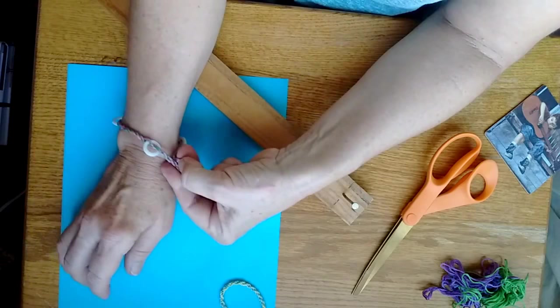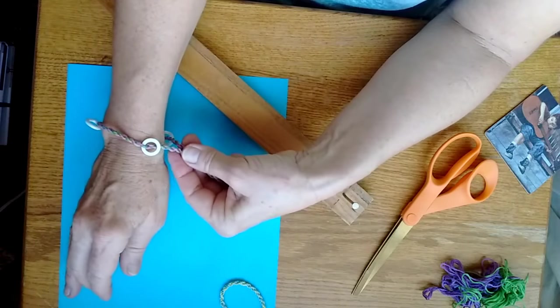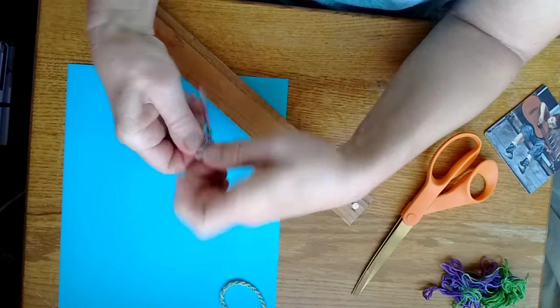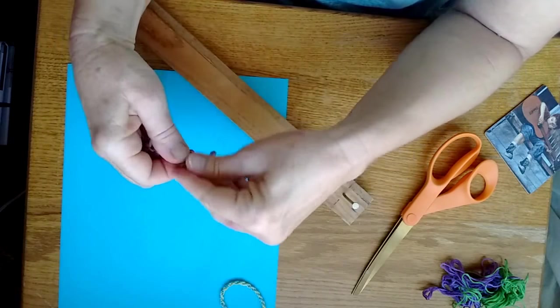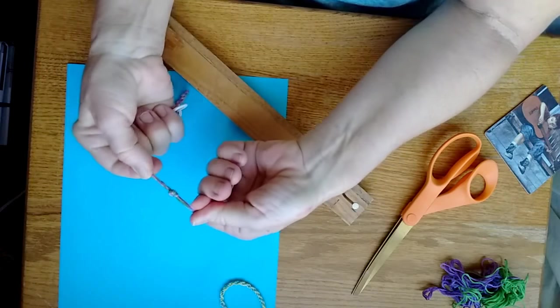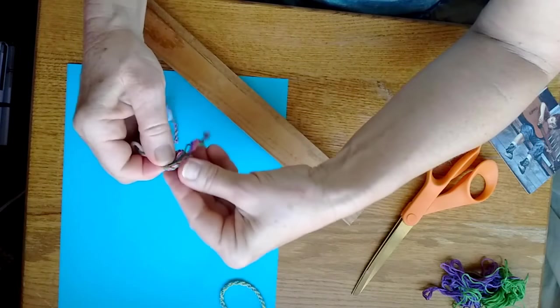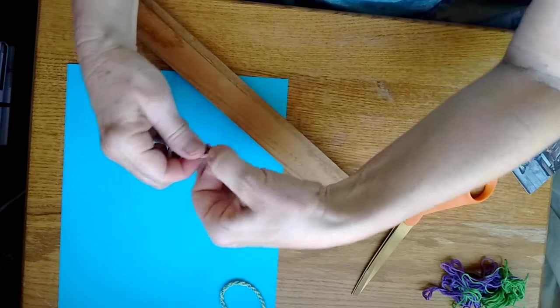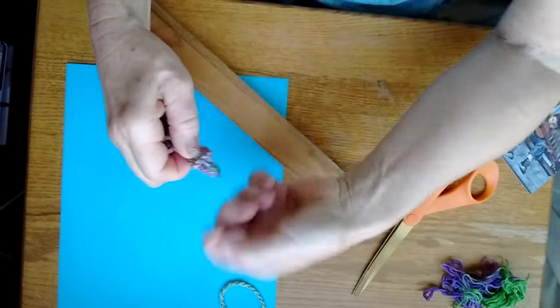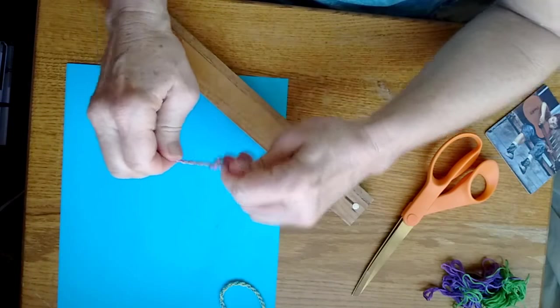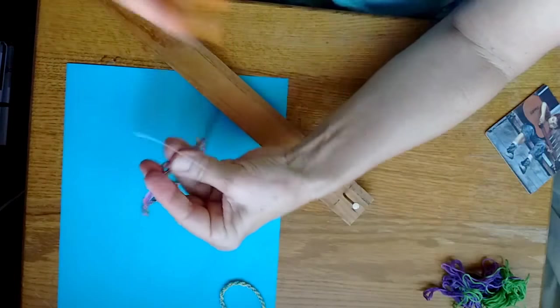Now kind of measure how wide you want it and then tie the knot. I'm gonna do a couple of them so one, two, let's go three. So this knot at the end is gonna fit in here.